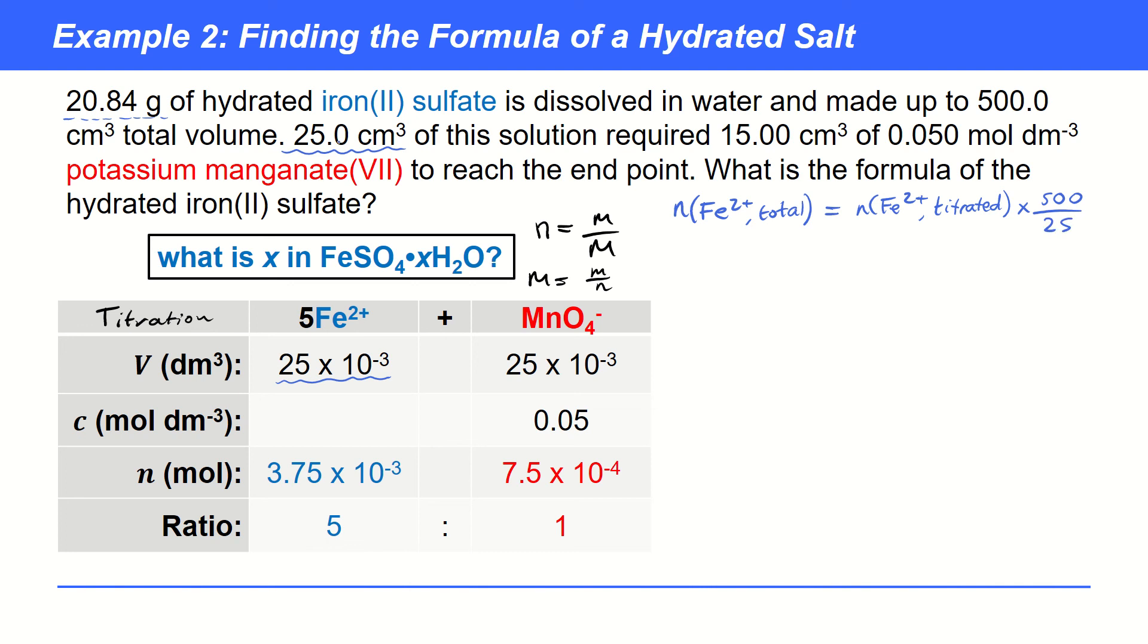Because we used 25 and we had 500 in total. So, we divide by 25 to get essentially how many moles in one centimetre cubed. And then we multiply by 500 to get how many moles in 500. So, once we do that, we actually find that in total, we have got a much larger value of the number of moles that has actually been used. And in this case, it just works out at 0.075 moles.